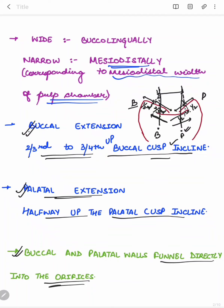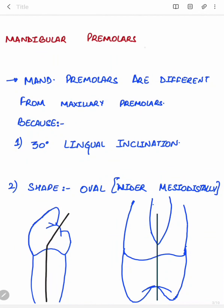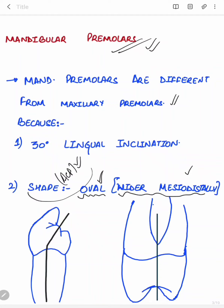Mandibular premolars differ from maxillary premolars because there is a 30-degree lingual tilt present — the crown is lingually tilted. The shape of the access cavity preparation is oval and wider mesiodistally, which is opposite to maxillary premolars where it was narrower mesiodistally. In this picture you can see the mandibular premolar crown is lingually tilted, while the maxillary premolar is not tilted at all.